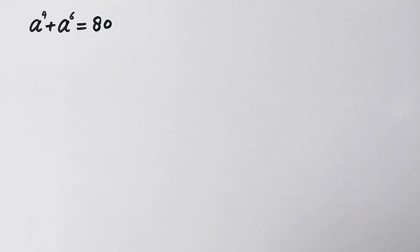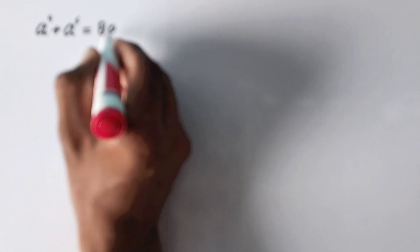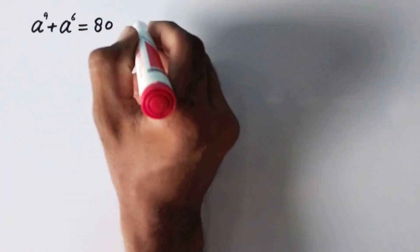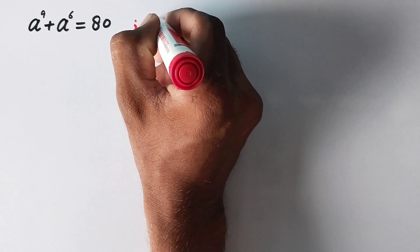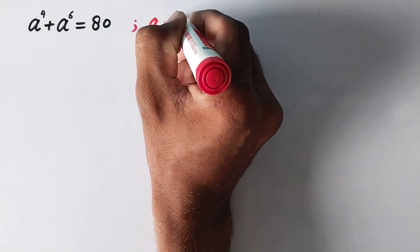Hello everyone. Welcome to Explore Maths. Today we are going to solve this 9th degree equation: A raised to the power 9 plus A raised to the power 6 is equal to 80, and we have to find the value of A. Let us see the solution.